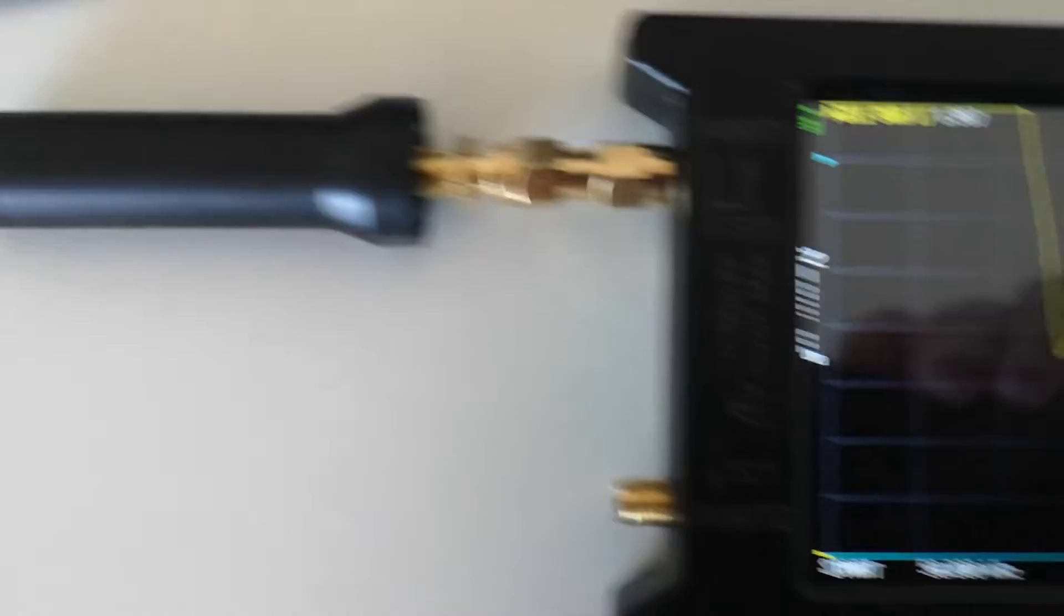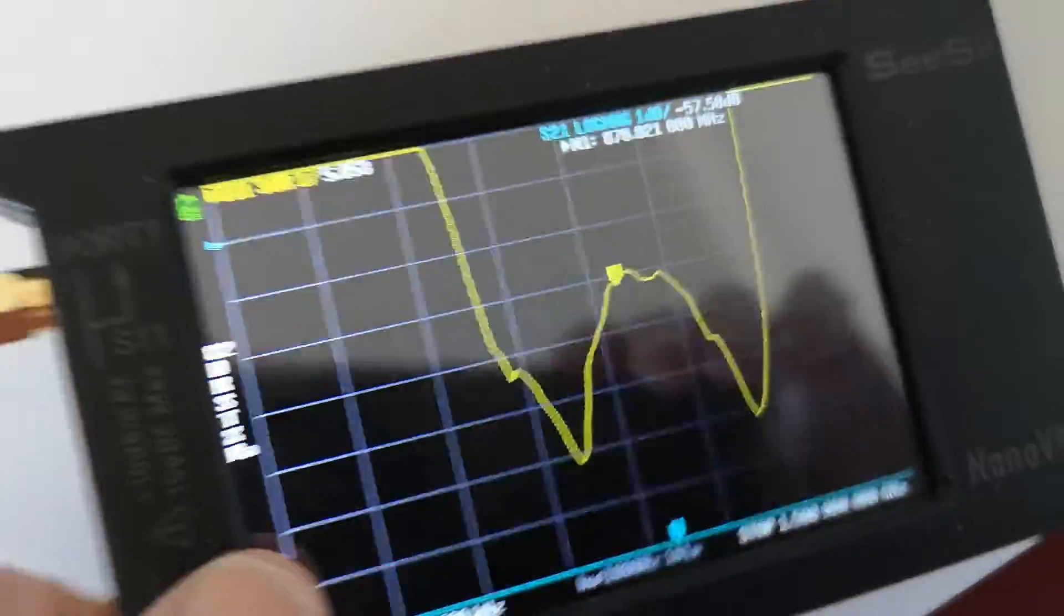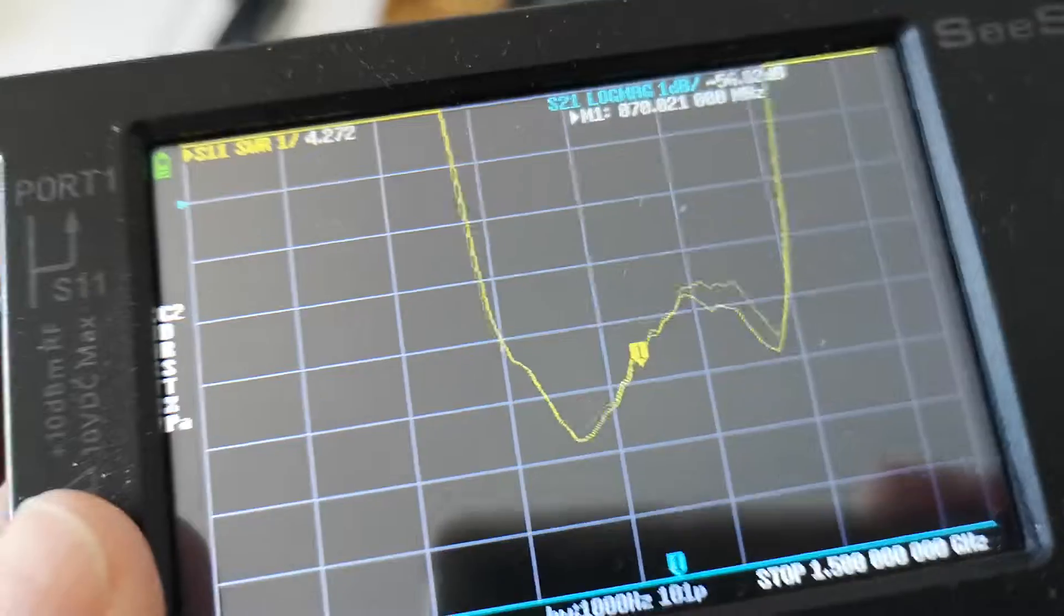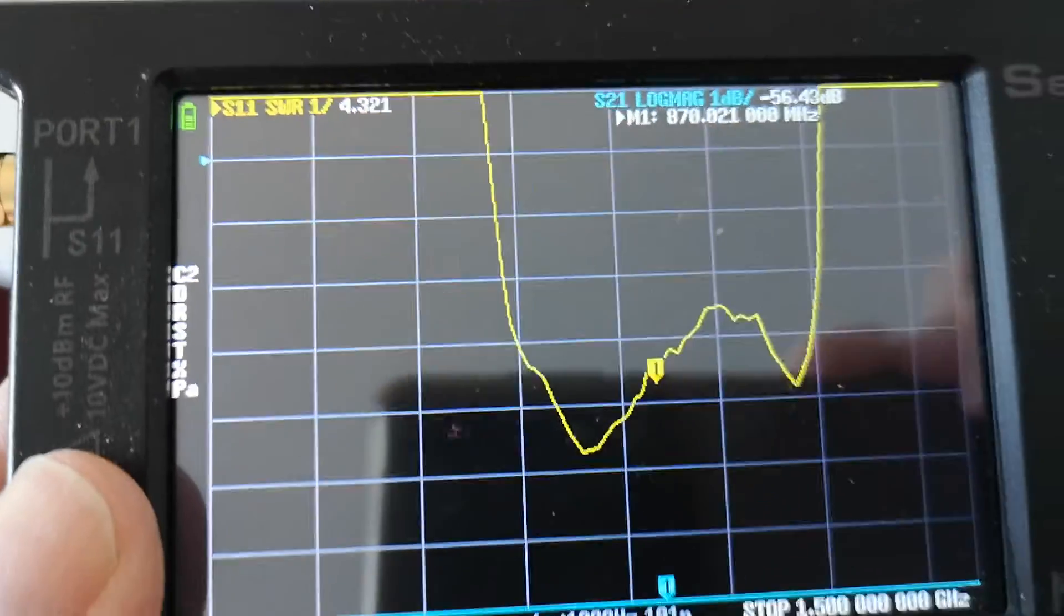This is my NanoVNA and let's look at the VSWR curve and oh dear this is one per division.